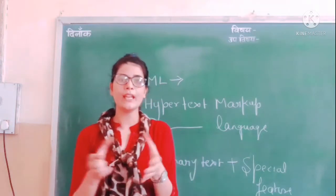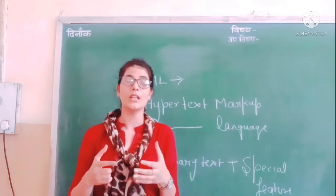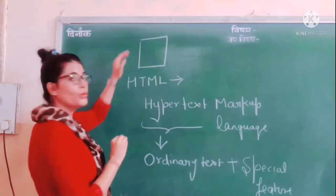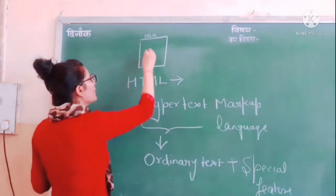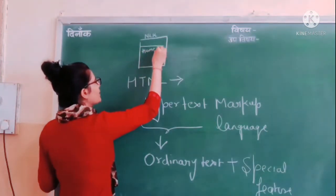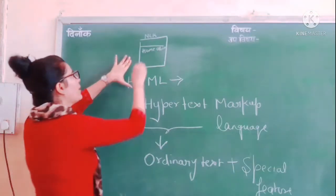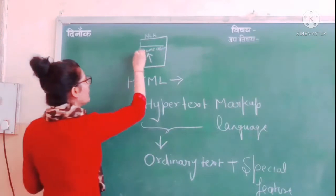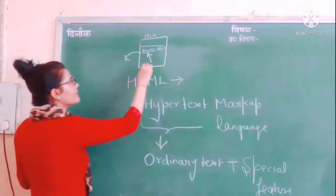Why are we talking about linking of another documents and pages? Because if you generally visit a website on the internet, you have seen there are a number of texts on that page — like 'Home' and 'About' — these kinds of texts written on one page of a website. The moment you click on that particular hypertext, how can you recognize that it is a hypertext or an ordinary text?